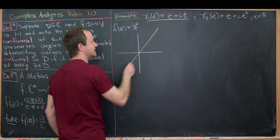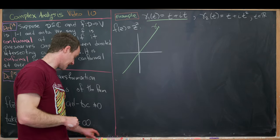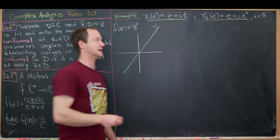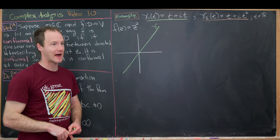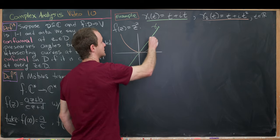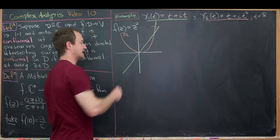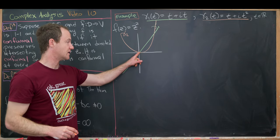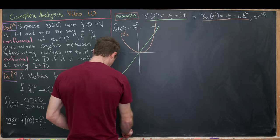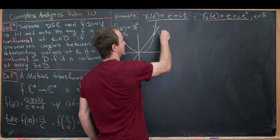For γ₂, the imaginary part is the real part squared, so this is the parabola y = x². These two curves intersect in two places: at the origin and at the point 1 + i. We want to find the angle between these curves — specifically at 1 + i, remembering we're in the complex plane. This intersection corresponds to the parameter value t = 1, since γ₁(1) = γ₂(1) = 1 + i.